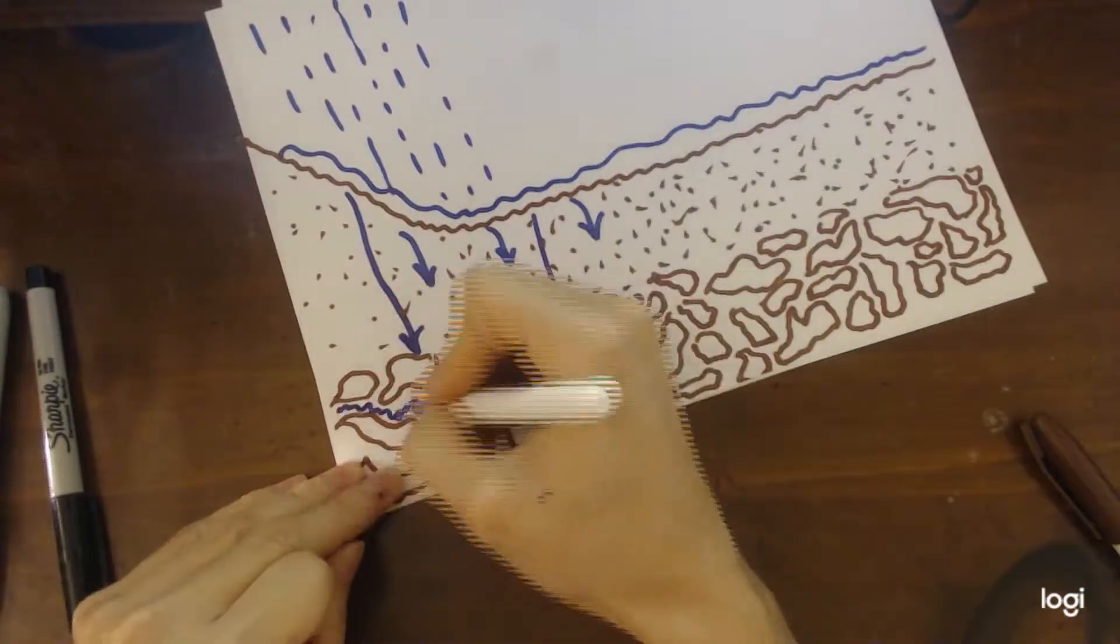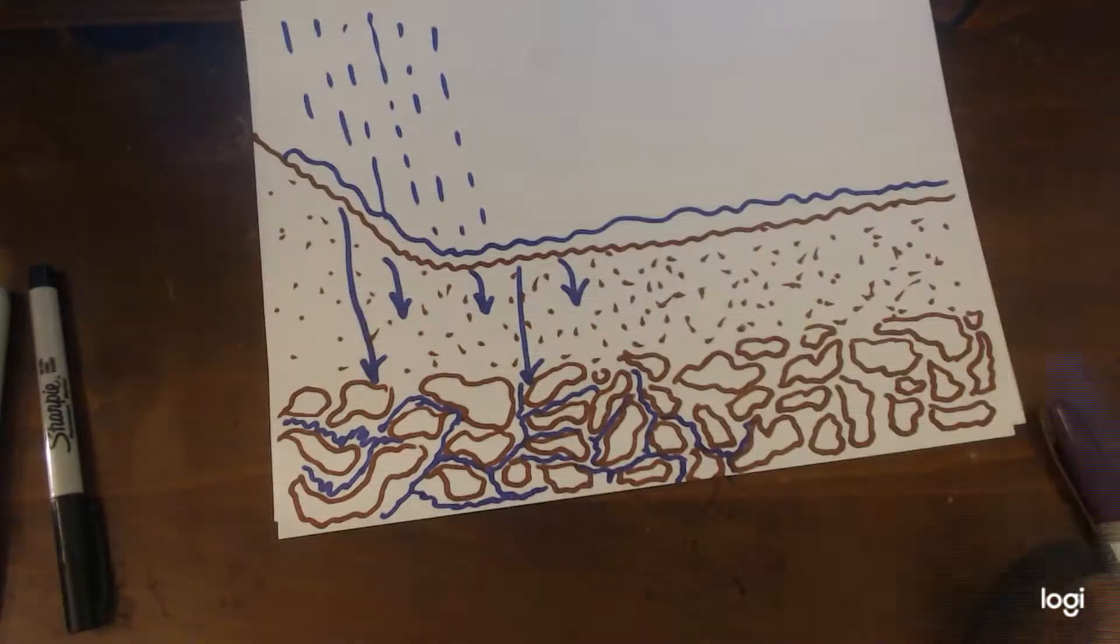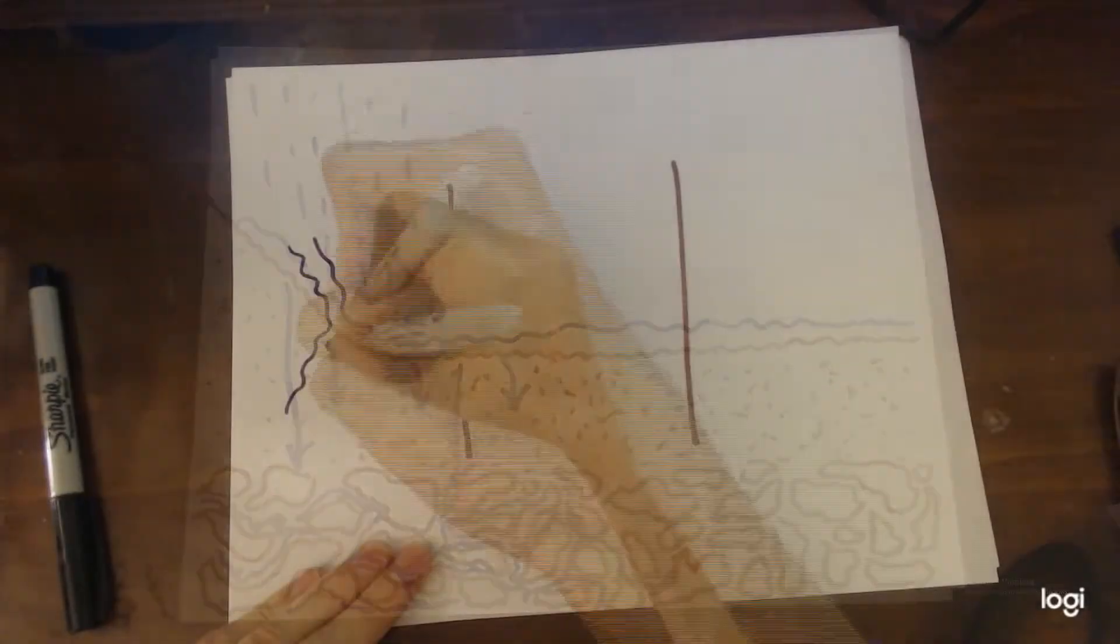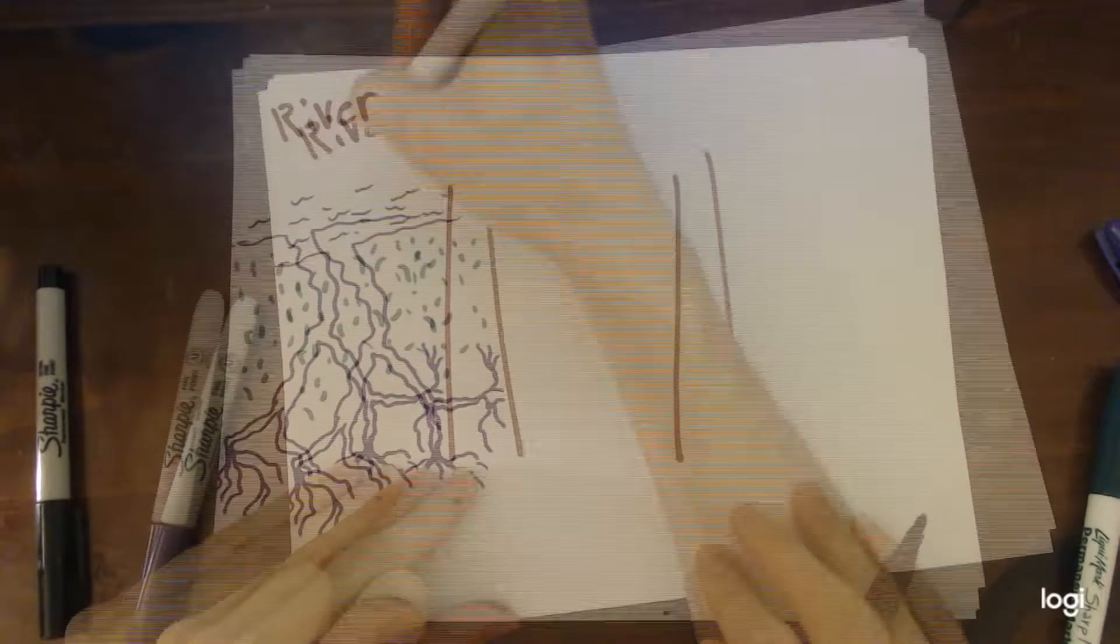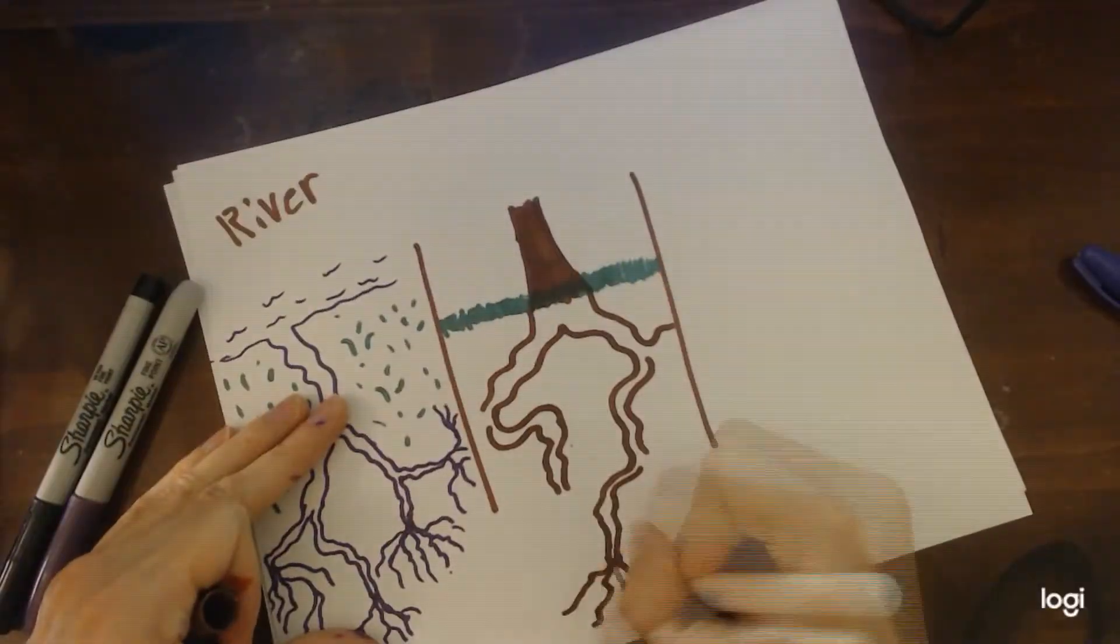Alright, so the water is now on the ground, but where is it going to go? Rivers, streams, and creeks are like roots for trees or veins for humans. They carry energy from multiple places to one.